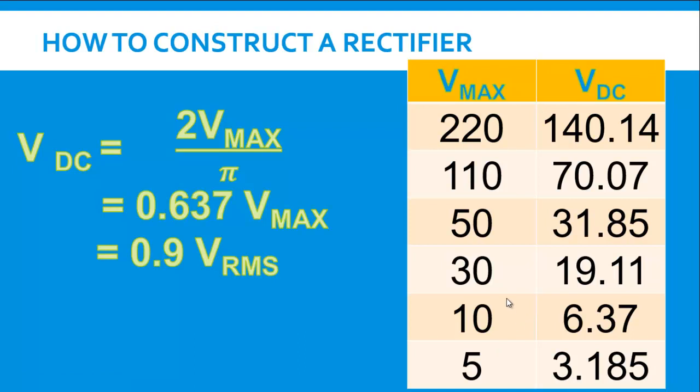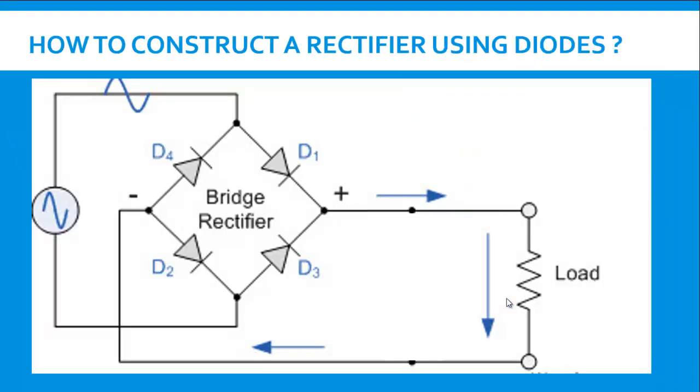In order to increase the net DC value we need to make a few more modifications in the circuit. Consider the bridge rectifier circuit again. Now the solution is very simple. All we need to do is just put a capacitor across the load and this capacitor is known as smoothening capacitor. So this is how it works.